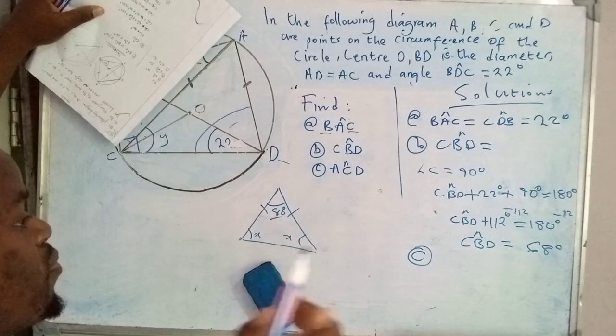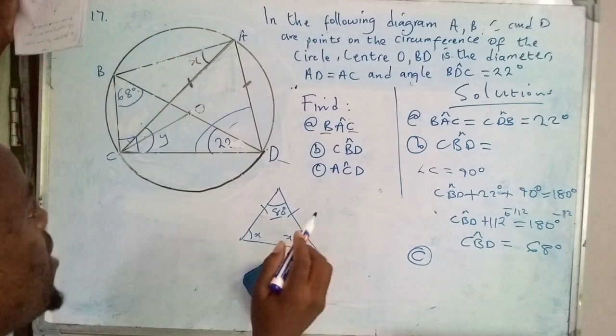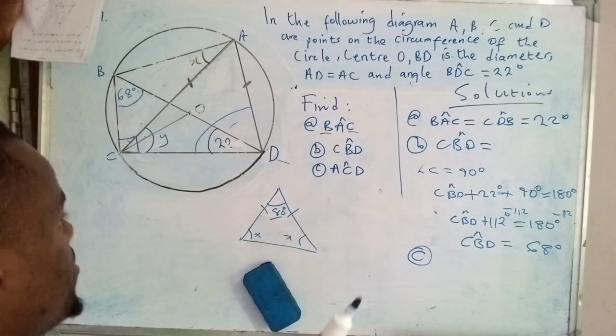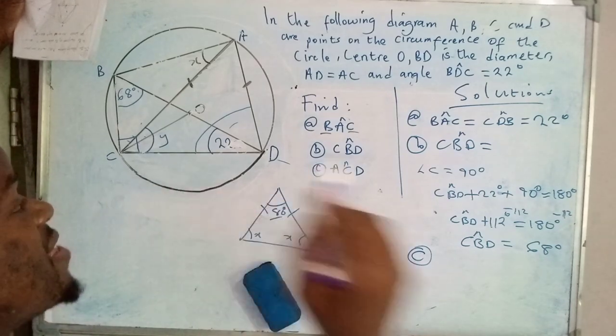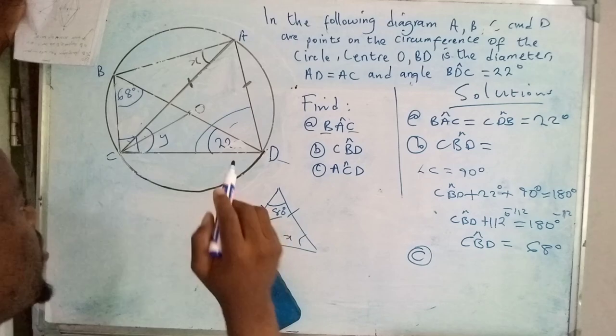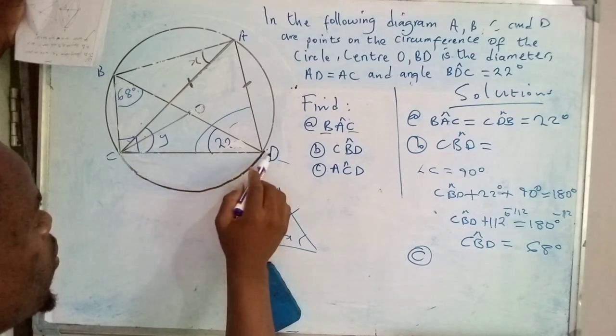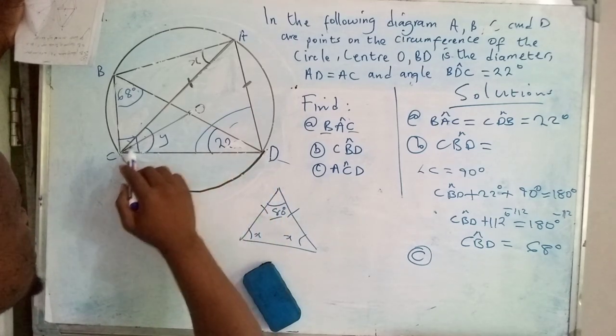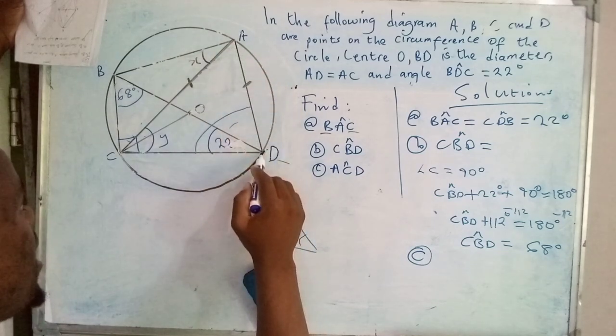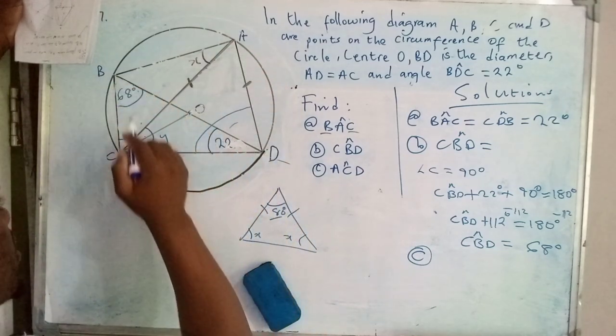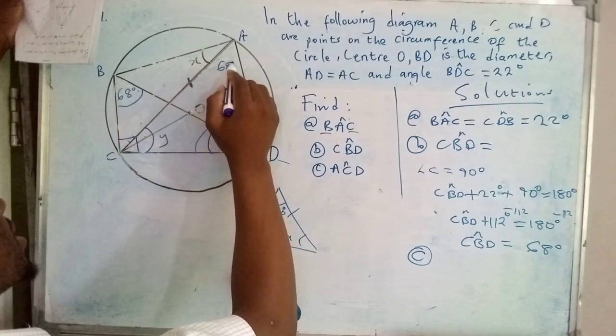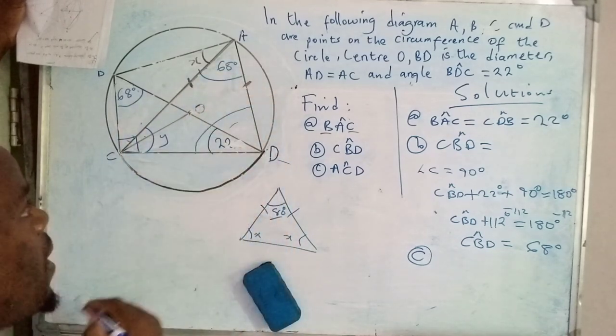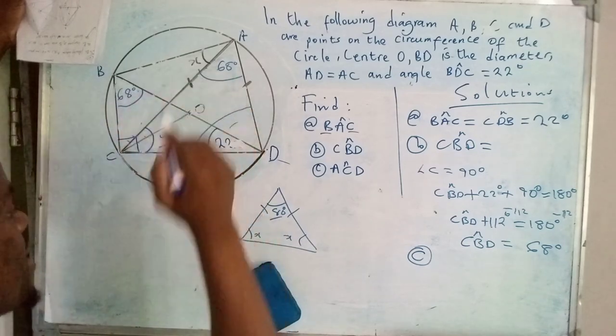We are going to apply a property which says that angles subtended by the same chord onto the circumference within the same segment are equal. So this chord here subtends this angle there and that angle there. So if this is 68, that one is 68 degrees as well. So this and that are equal.